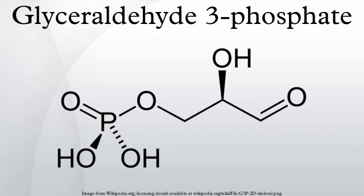It is a phosphate ester of the 3-carbon sugar glyceraldehyde and has chemical formula C3H7O6P. The CAS number of glyceraldehyde 3-phosphate is 591-59-3, and that of D-glyceraldehyde 3-phosphate is 591-57-1. It is an intermediate in both glycolysis and gluconeogenesis.